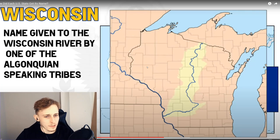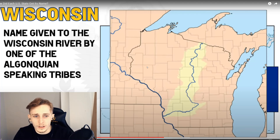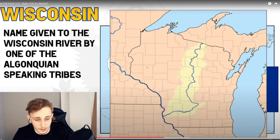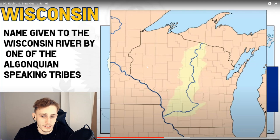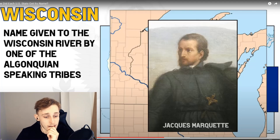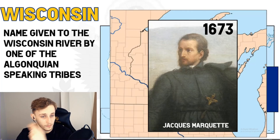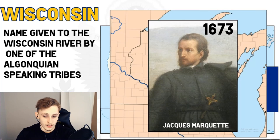Wisconsin's name originates from what the Algonquin-speaking tribes called the Wisconsin River. French explorer Jacques Marquette was the first European to reach it in 1673, calling it 'Meskonsing.' Subsequent French writers changed the spelling to Wisconsin, and over time this became the name for both the river and the surrounding lands, then adapted into English. I'm curious whether these native tribes still exist today, and whether they typically still live in the states named after them.